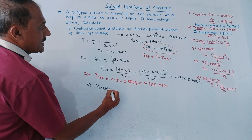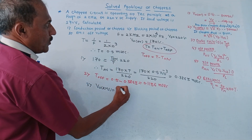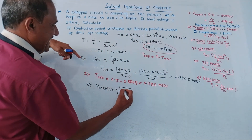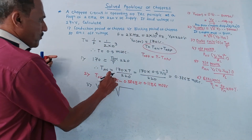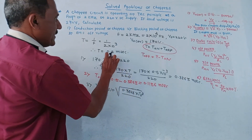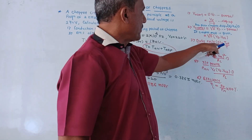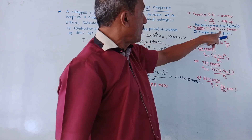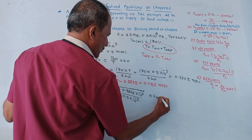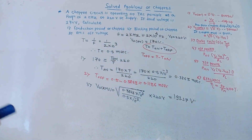We have the direct formula: V0 RMS equals root D into Vs. D equals Ton upon T, so substituting: V0 RMS equals square root of (0.3863 into 10 raise to minus 3 upon 0.5 into 10 raise to minus 3) into 220 volts. Solving this gives V0 RMS equals 193.37 volts. This is the RMS output voltage.